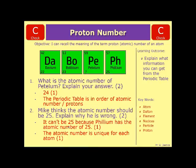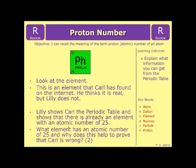Hopefully that's made sense. If you're feeling confident, have a look at this review question, which is based on philium again. It says: look at this element that Carl has found on the internet — he thinks it's real, but Lilly does not. Lilly shows Carl the periodic table and shows that there is already an element with the atomic number of 25. What element has an atomic number of 25, and why does this help to prove that Carl is wrong? Think back to what we've just been through, and grab yourself a periodic table from the internet and have a look at which one has an atomic number of 25.